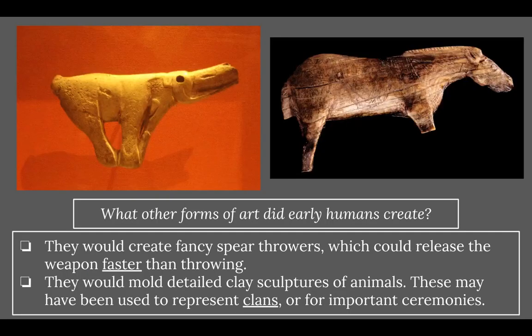What other forms of art did early humans create? They would create fancy spear throwers, which could release the weapon faster than throwing by hand. You'd put the spear in it and it would increase the velocity, doing more damage when hitting an animal. They would also mold detailed clay sculptures of animals, which may have been used to represent clans or for important ceremonies — perhaps a bear clan or a horse clan.